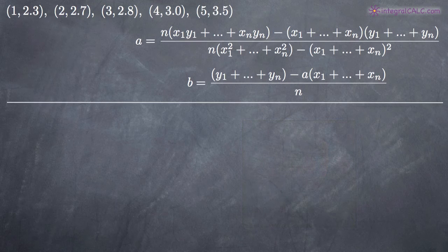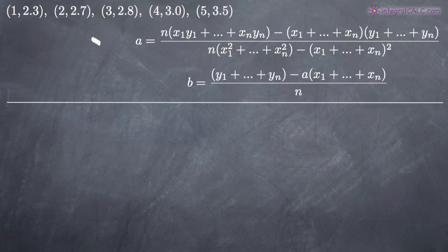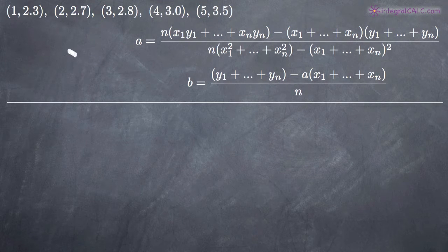In this particular problem, we've been given this set of data here. It's a set of five points: (1, 2.3), (2, 2.7), etc. This data is supposed to model a company's revenue in billions of dollars over a five-year span.